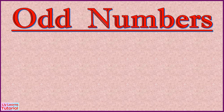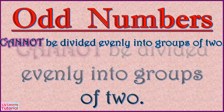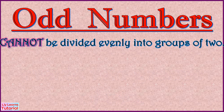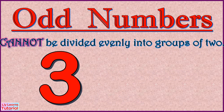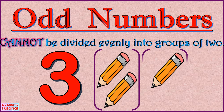When we talk about odd numbers, we must remember that odd numbers cannot be divided evenly into groups of two. Let's take number three as an example. We cannot divide it evenly into groups of two. There is one group of two and one group of one, so that makes it an odd number.